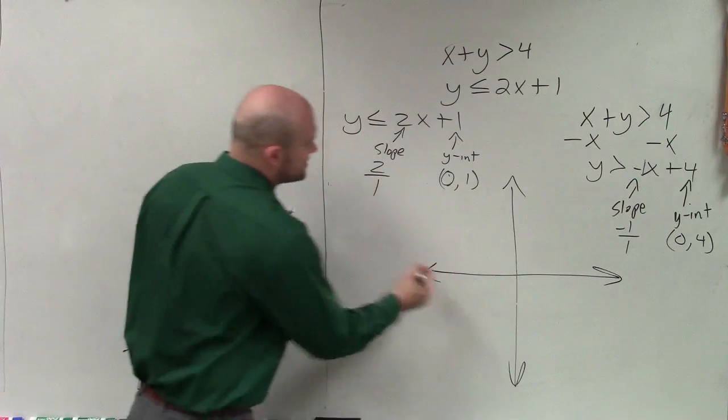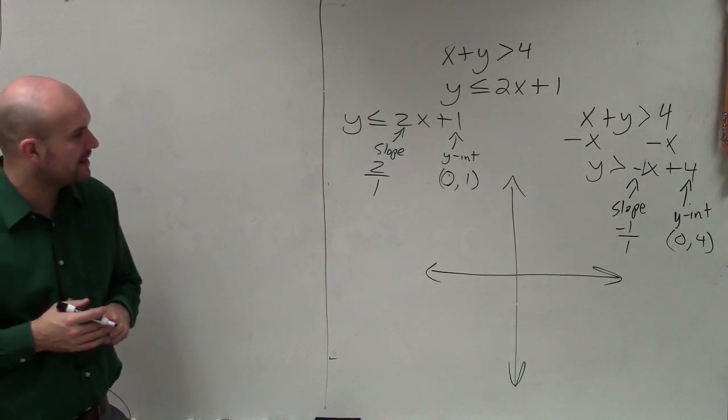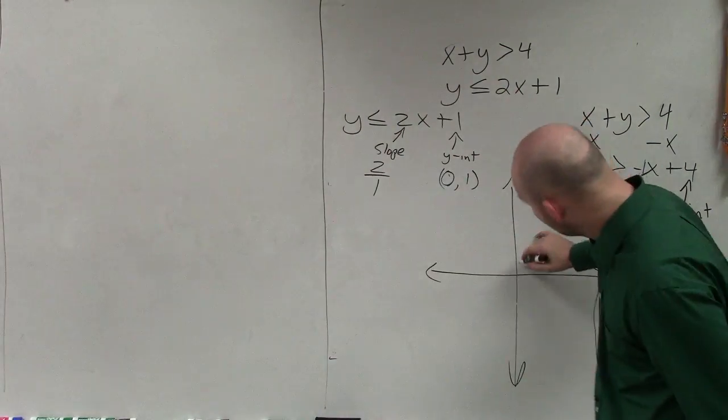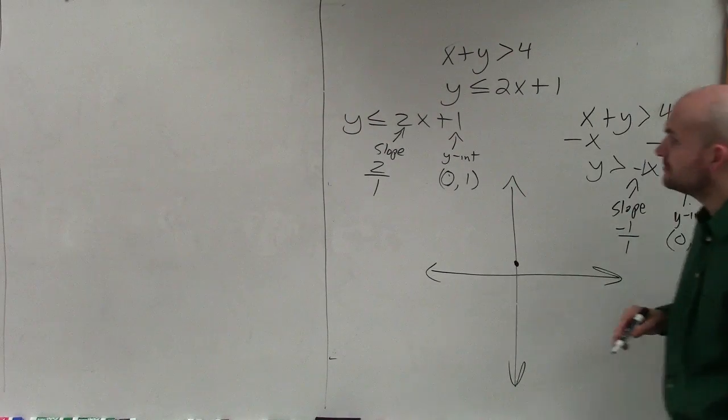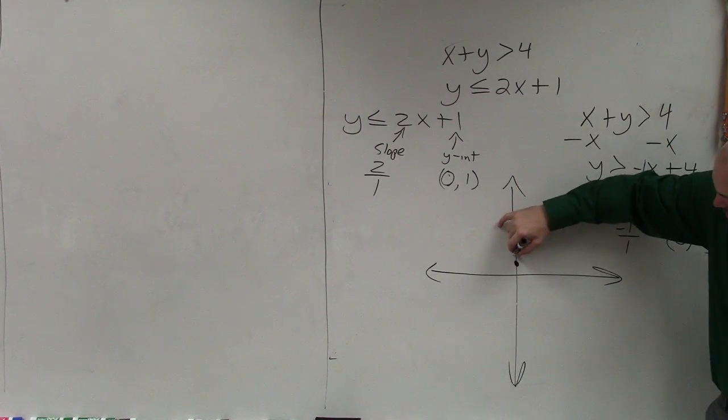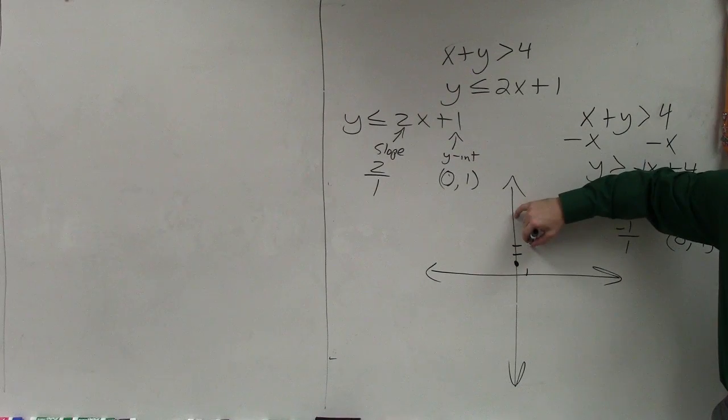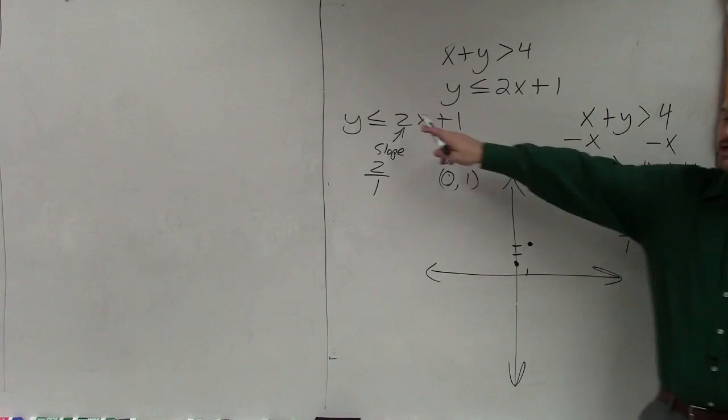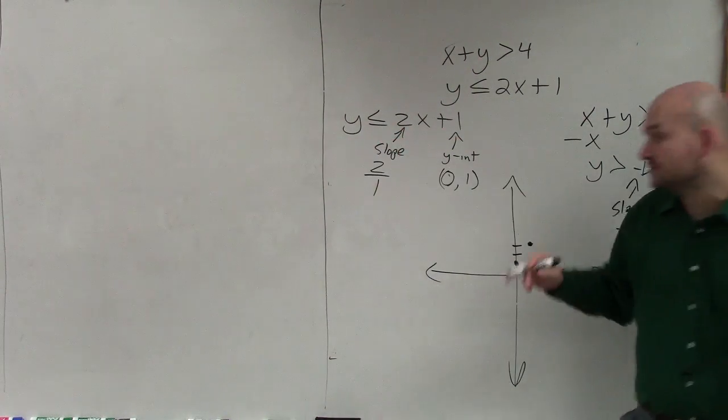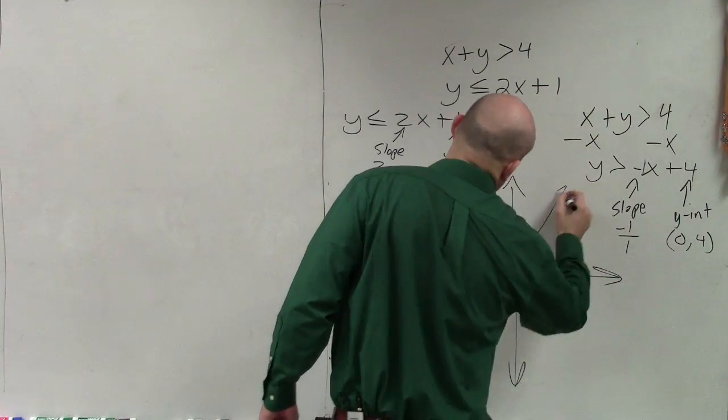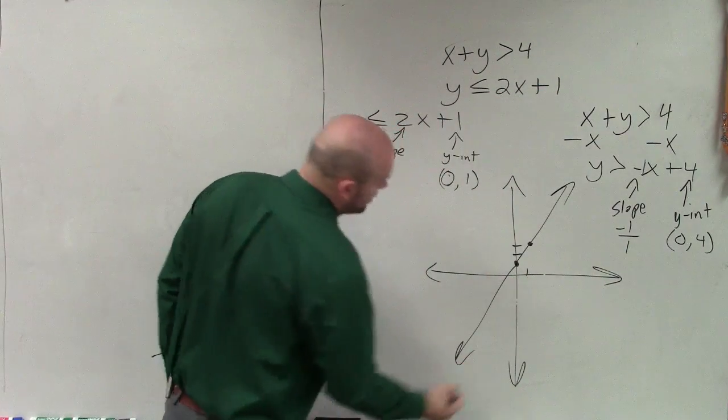Now let's go ahead and graph each one of these. Let's graph this one first. I go to my y-intercept first and plot 0, 1. Then I use the slope, which is up 2 over 1, to find my next point. I notice this is less than or equal to, so it's a solid line, not dashed. That means the points that lie on the line are part of the solution.